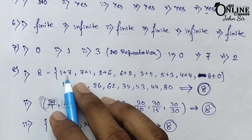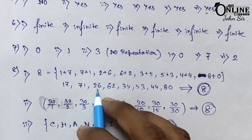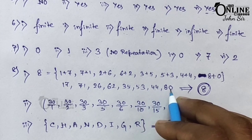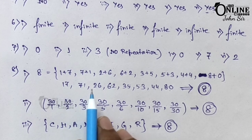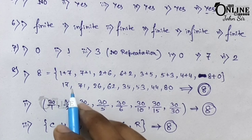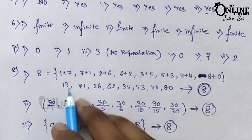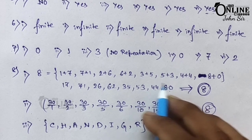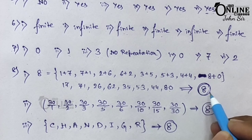Each of these is a two-digit number whose digits add up to 8: 17, 71, 26, 62, 35, 53, 44, 80. Counting the elements: 1, 2, 3, 4, 5, 6, 7, 8. There are 8 elements, so the cardinal number is 8.